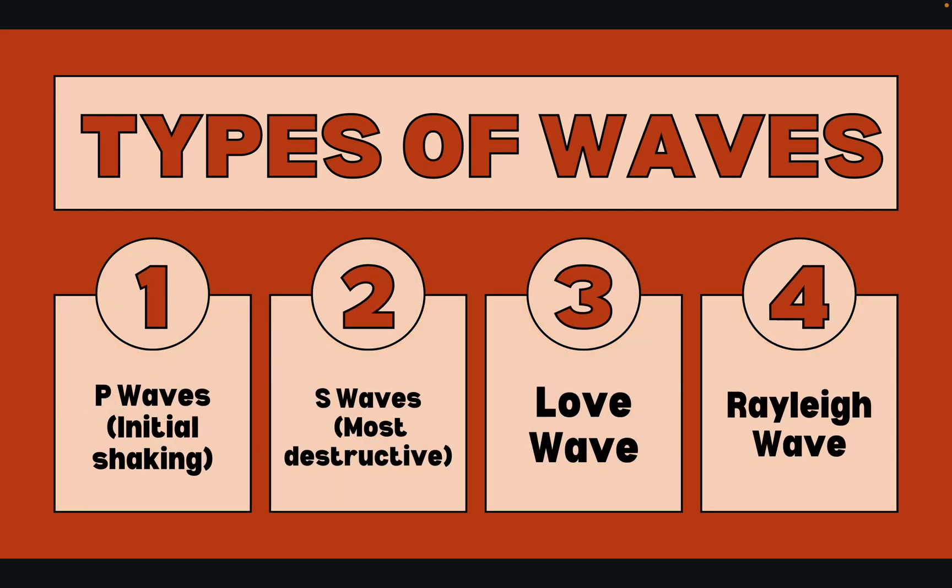Now let's talk about the types of earthquake waves. The first one is P waves, then S waves, the Love wave, and the Rayleigh wave.